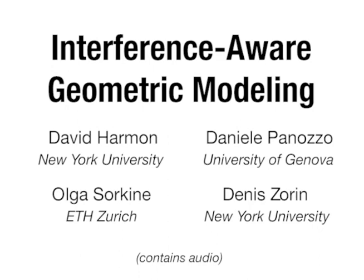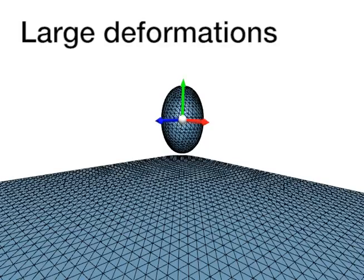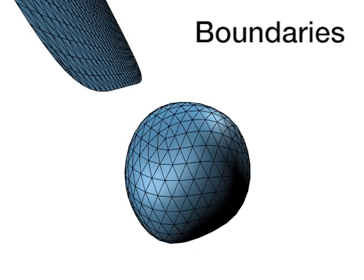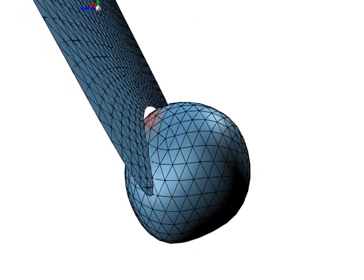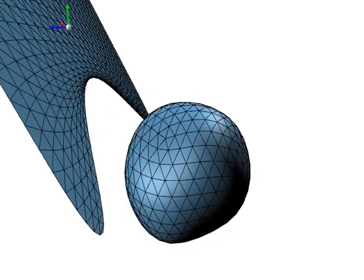Many tasks in shape design and manipulation are made easier by interference-aware geometric modeling, which detects and responds to intersections during interactive modeling sessions. We can handle difficult cases such as large deformations and intersections involving boundaries — both are problem cases for existing methods.